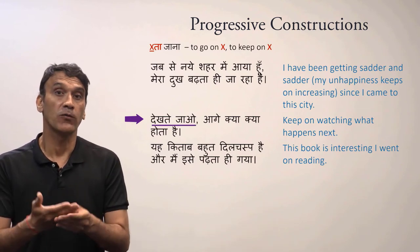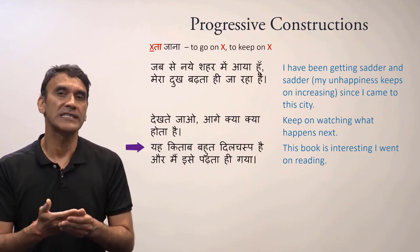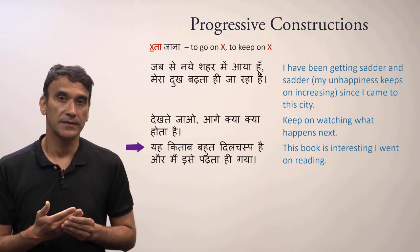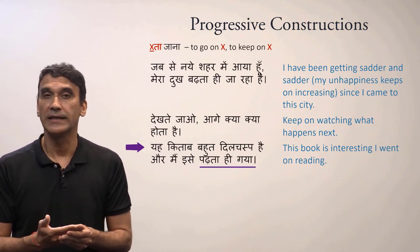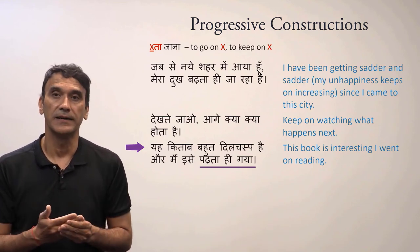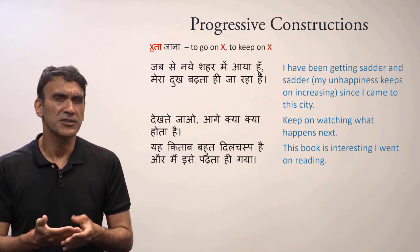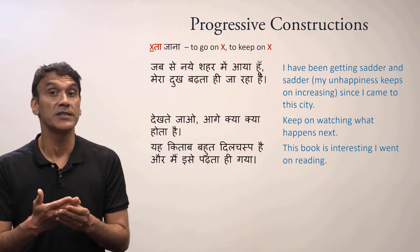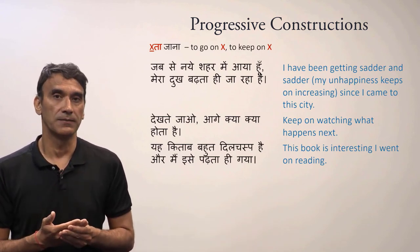Dekhte jao - keep on watching, or go on watching. Yeh kitab bohot dilchasp hai, main ise padhta hi gaya - the book is very interesting, I went on reading. The part 'I went on reading' is main ise padhta hi gaya. As noted, this construction is very similar to the continuative construction we learned before, and they are often interchangeable.